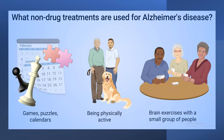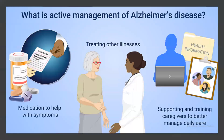Non-drug treatments for Alzheimer's include playing games, puzzles, working on calendars, being physically active, and brain exercises with small groups of people. Active management involves using medications to help with symptoms, treating other illnesses, and supporting and training caregivers to better manage daily care.